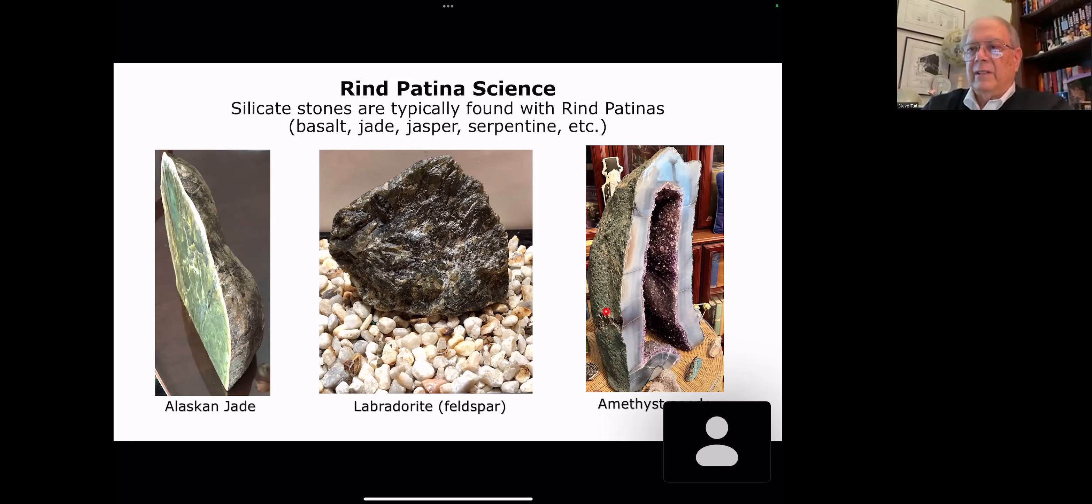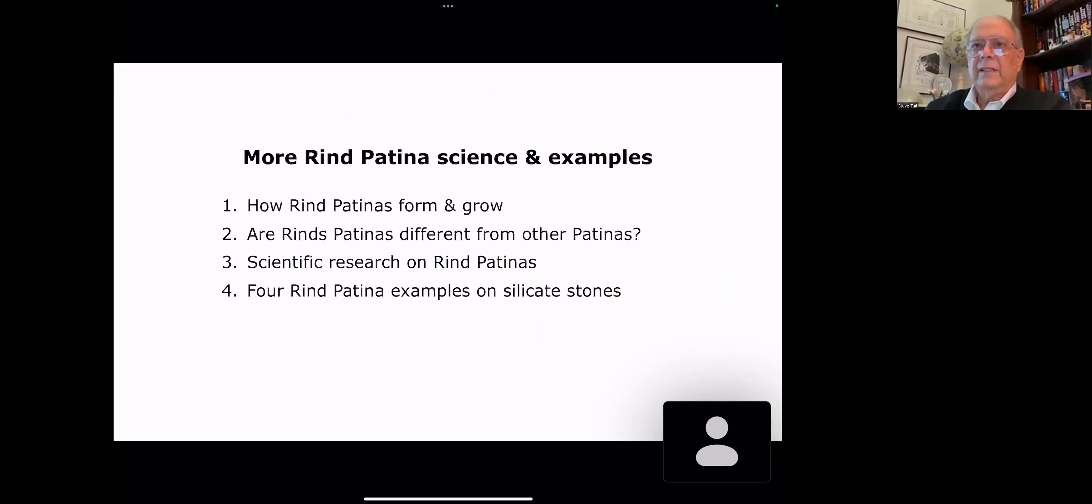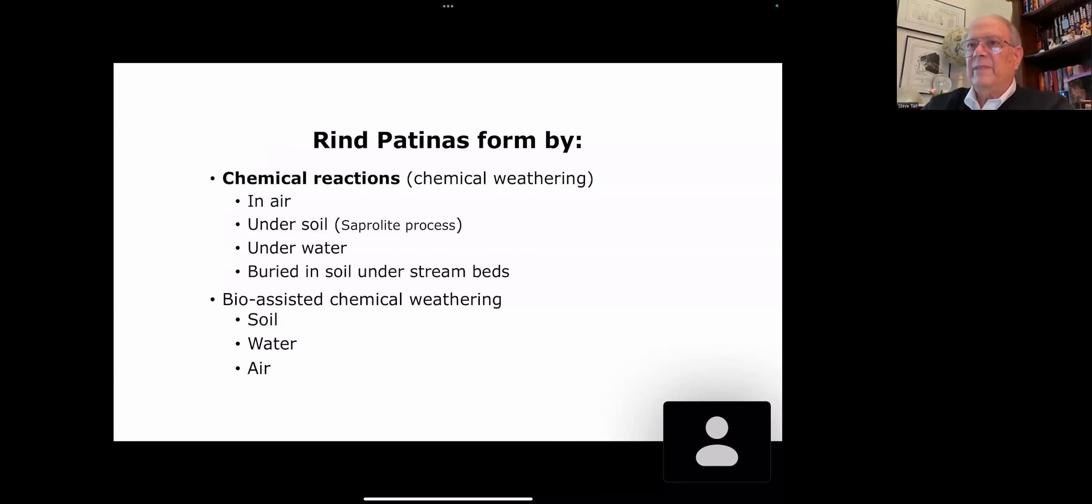Amethyst, this is another one in our collection. These are all large specimens. I think this one's about 25 inches, but this has the iron rind patina on it. Not very pretty, but look at there's a gorgeous viewing stone on the inside. So let's continue on. We'll talk about how rind patinas grow and form. I'll compare the different four different types of patinas, talk about some of the scientific research that's going on, and then finish up with four examples of patinas.